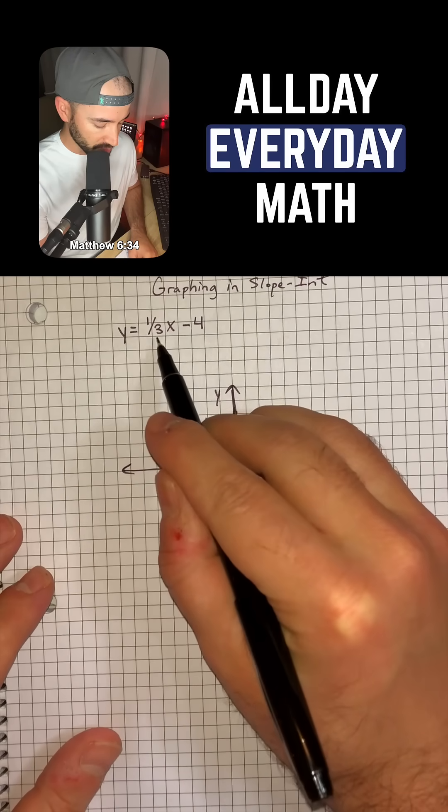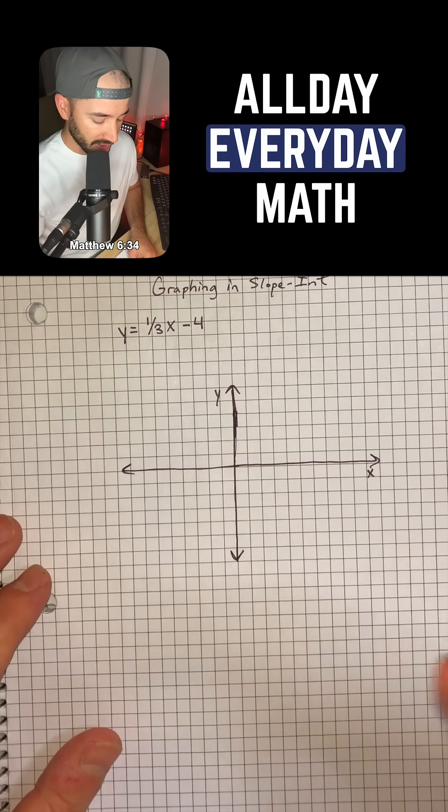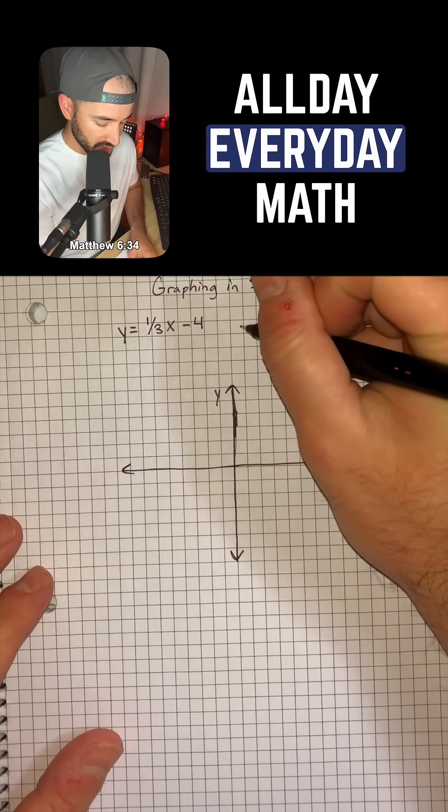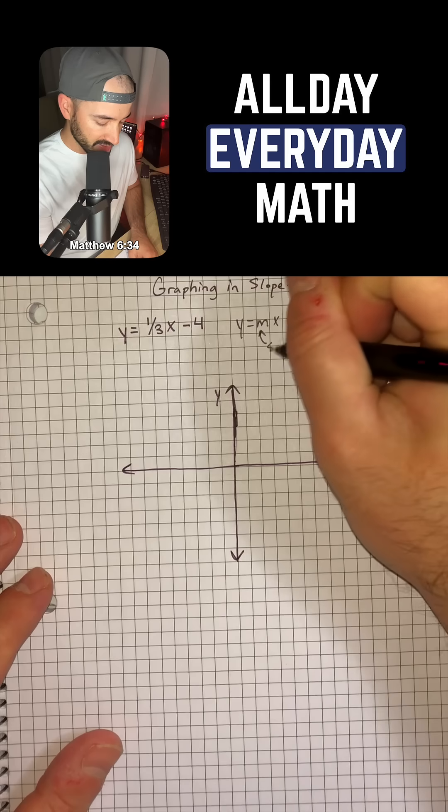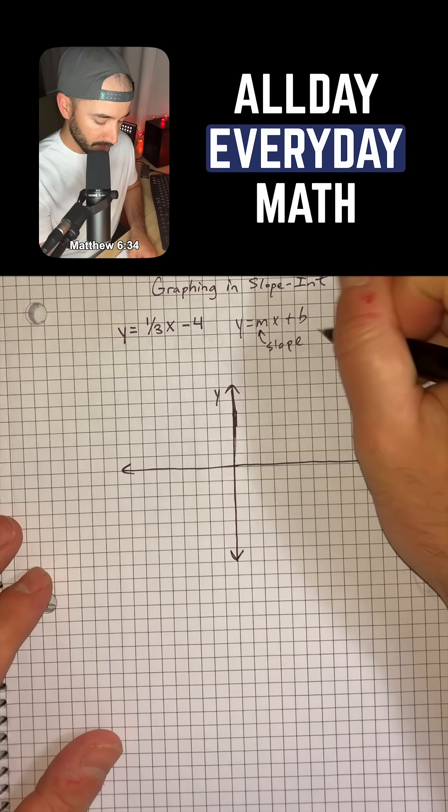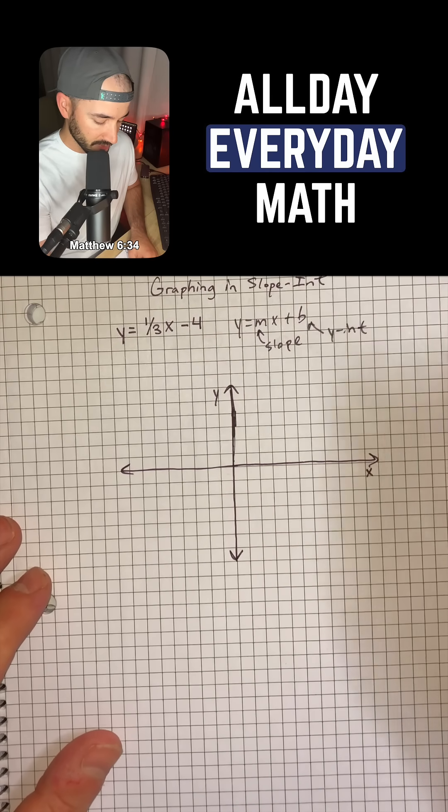So we have the equation y equals 1/3x minus 4, and this is in slope-intercept form, which is y equals mx plus b. So m is going to be our slope and b is our y-intercept.